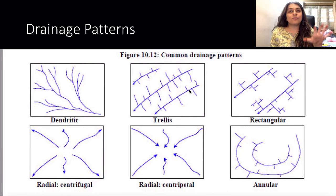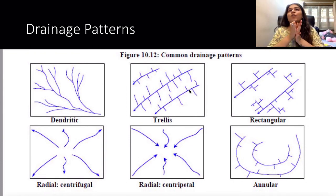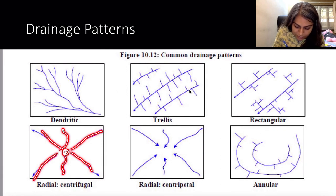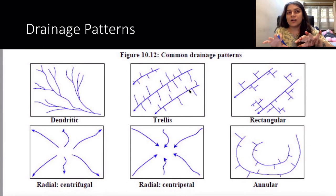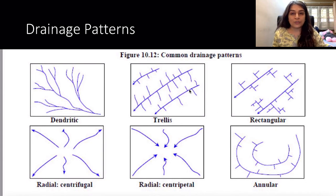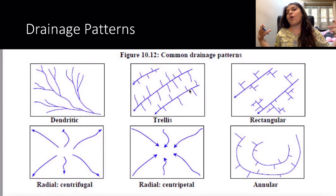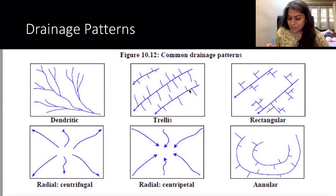Centrifugal drainage is also called radial drainage pattern — multiple rivers originate from one mountain peak and flow in different directions. In centripetal drainage, rivers from all directions flow into one reservoir or lake, such as into a caldera forming a crater lake. There are five important drainage patterns in total.